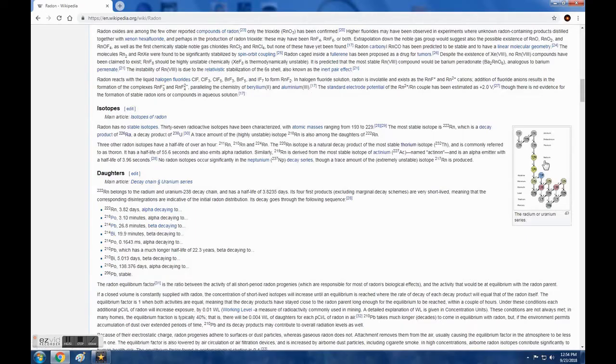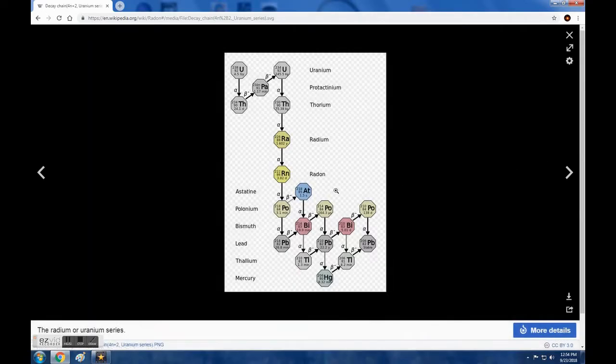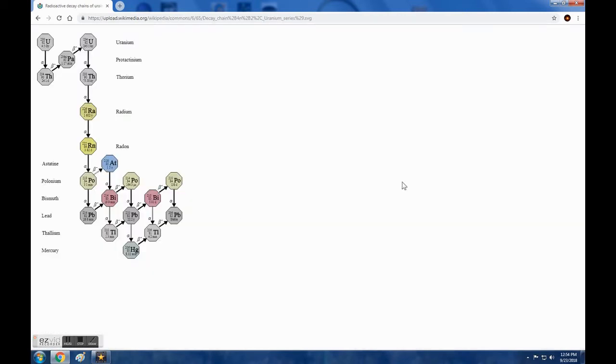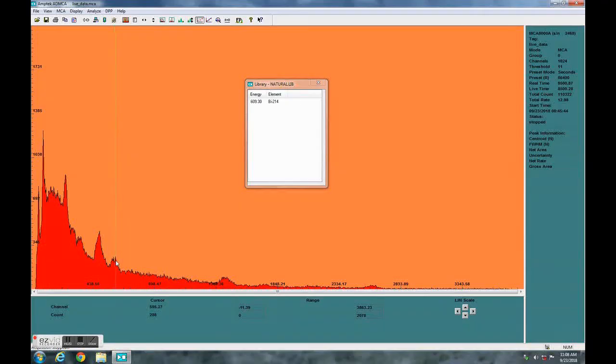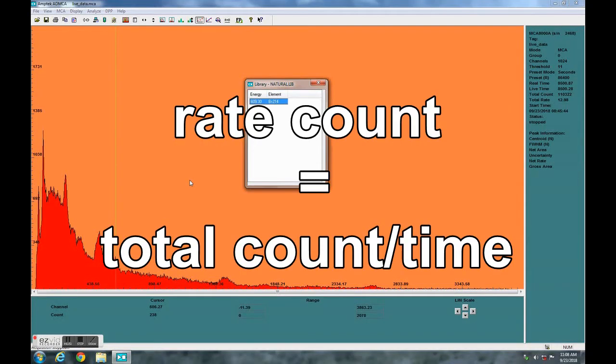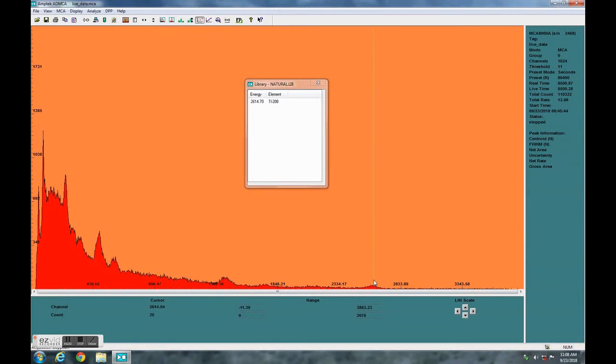As you would expect, the radon and its daughters are present. Radon-222 has the longer half-life, so we have Bismuth-214 and Lead-210. The software has a total count and a rate count.